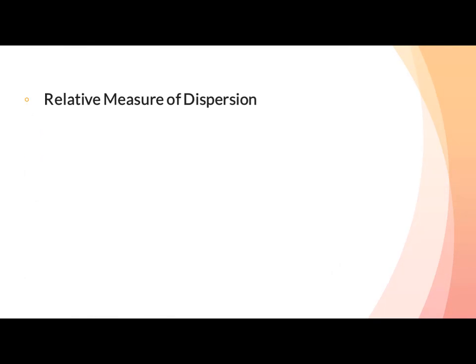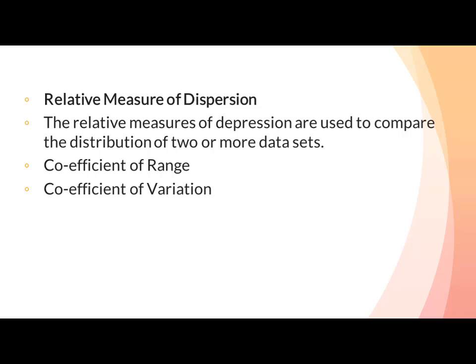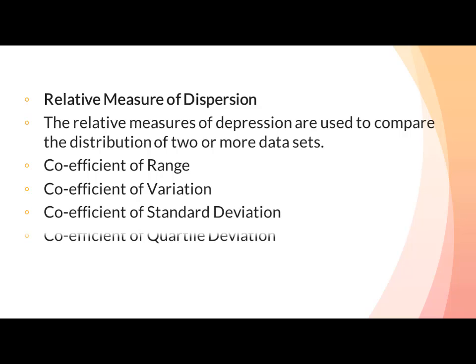Relative measure of dispersion: the relative measures of dispersion are used to compare the distribution of two or more data sets. Relative measures of dispersion are without units. Common relative dispersion methods include coefficient of range, coefficient of variation, coefficient of standard deviation, coefficient of quartile deviation, and coefficient of mean deviation.